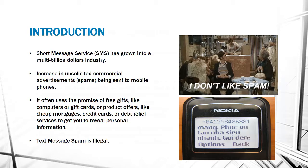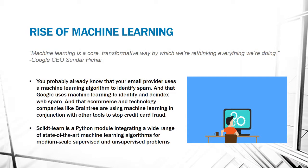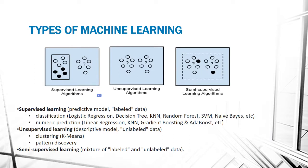You probably already know that your email provider uses a machine learning algorithm to identify spam. Google uses machine learning to identify and de-index web spam, and there are companies like Braintree which are using machine learning in conjunction with other tools to stop credit card fraud. Scikit-learn is a Python module integrating a wide range of state-of-the-art machine learning algorithms for medium-scale supervised and unsupervised problems. In this project I have used scikit-learn.